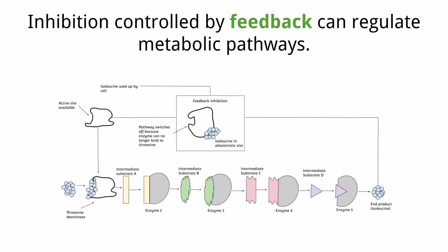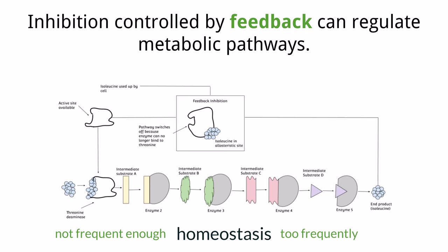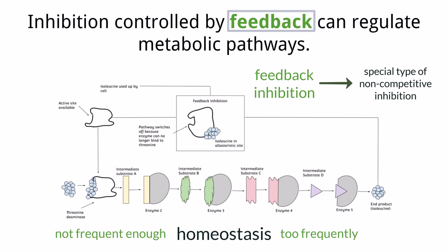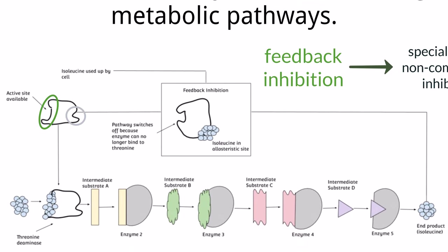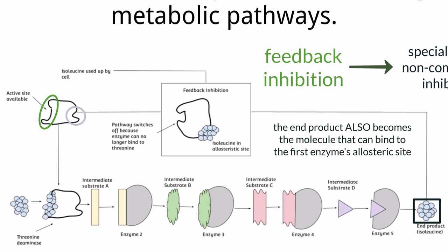The human body is all about balance and maintaining homeostasis, and it is important that enzymes are balanced as well — not working too much or too little depending on what a particular cell needs. In order to regulate the use of enzymes, certain pathways contain a self-regulating process called feedback inhibition. This works via non-competitive inhibition. In feedback inhibition, the product of the catalyzed reaction that takes place via the active site becomes the molecule that can then bind to the allosteric site, so the enzyme is literally creating the molecule that can also stop it from functioning.